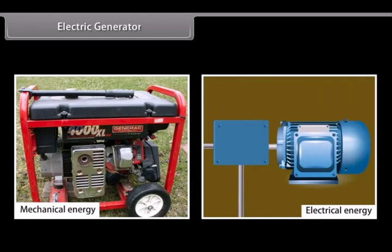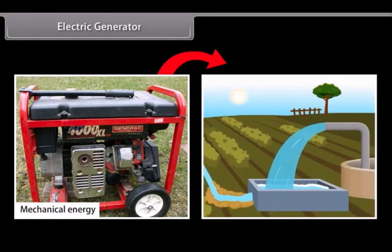Electric Generator. An electric generator converts mechanical energy to electrical energy. It forces electrical charge to flow through an external electrical circuit. Examples include a water pump which causes water to flow but does not create water.